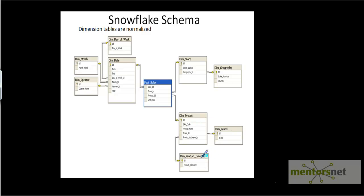Product dimension is split into product, brand, and product category. So this is also a variant of star schema used in some scenarios like what we have discussed just now.